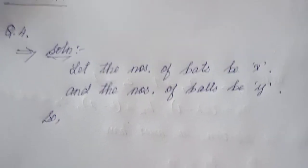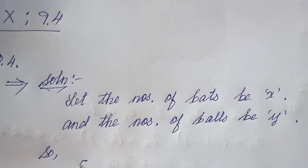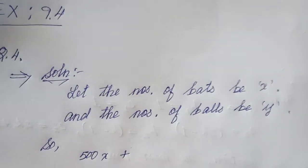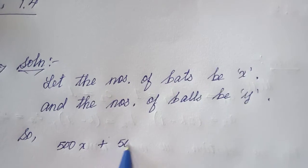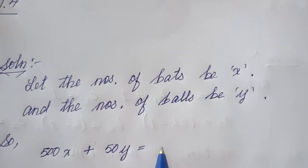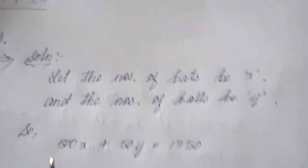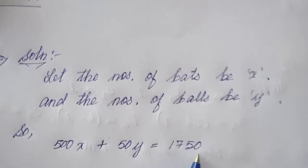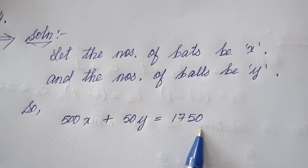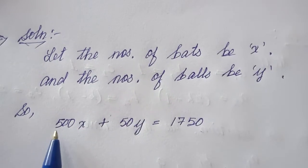For the first equation, one bat costs 500 rupees, so we have 500x. One ball costs 50 rupees, so we add 50y. This equals the total amount spent, which is 1,750. So equation one is: 500x + 50y = 1750. We are only talking about money here, so the total amount spent is 1,750 — don't use eight here, that is the count.